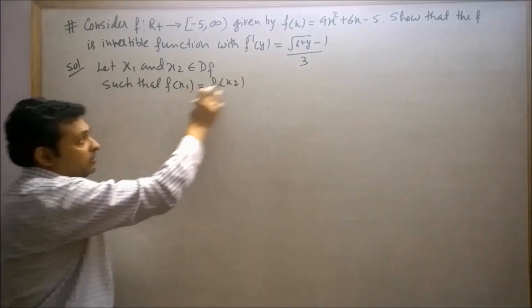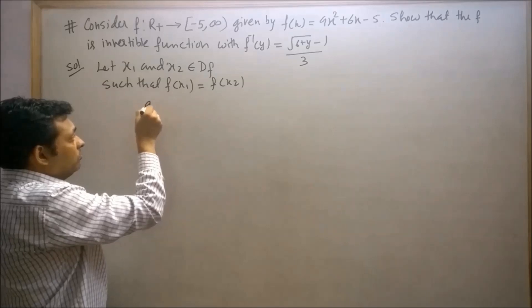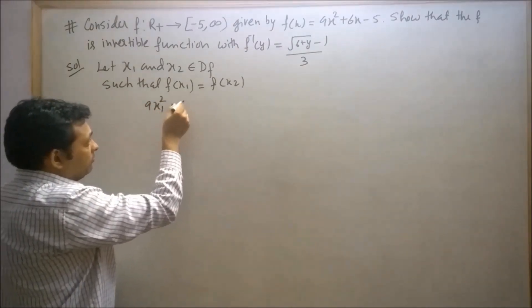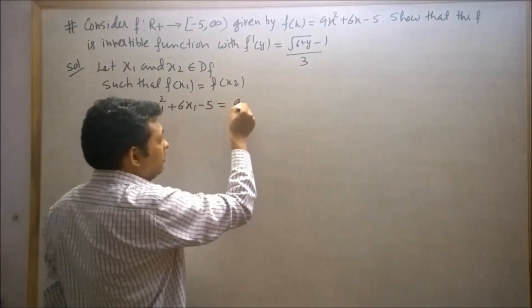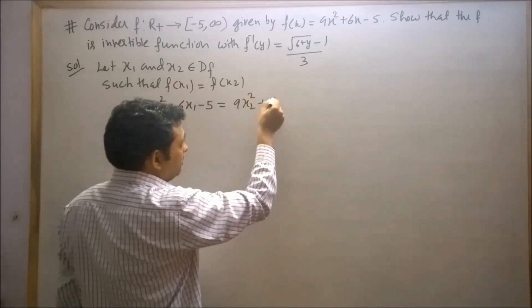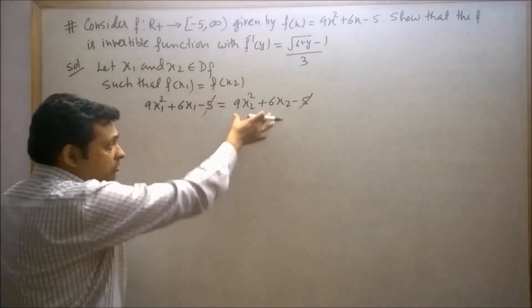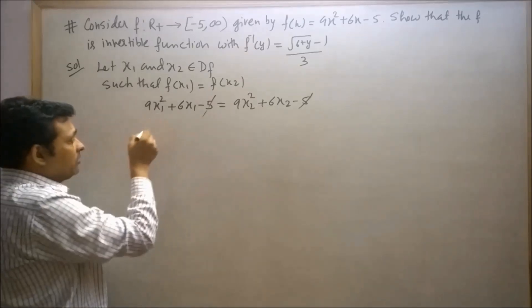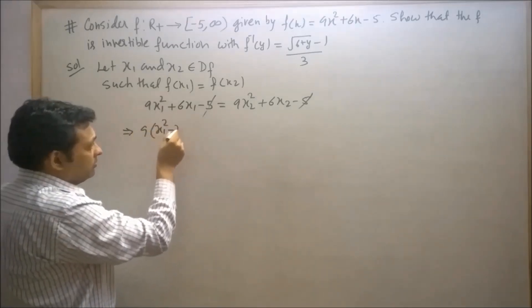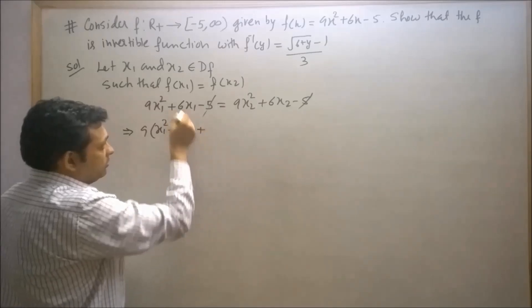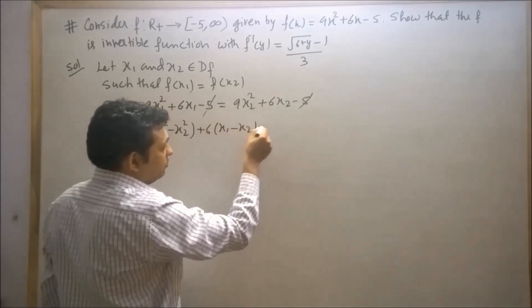Since f(x) = 9x² + 6x - 5, we have 9x₁² + 6x₁ - 5 = 9x₂² + 6x₂ - 5. The -5 terms cancel out. Transposing and taking 9 common gives 9(x₁² - x₂²) + 6(x₁ - x₂) = 0.